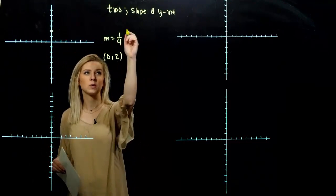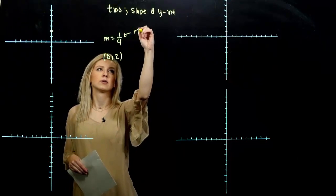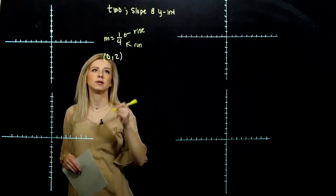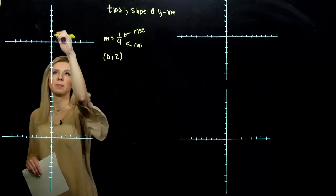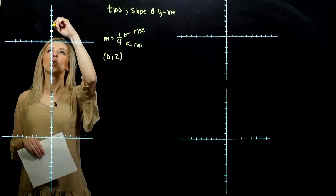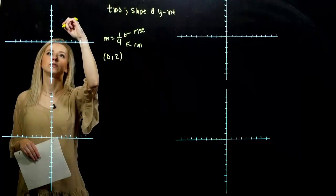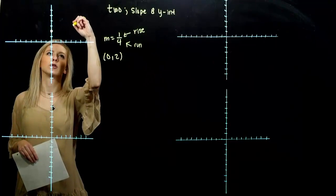From there, we want to rise according to the numerator and run according to the denominator. From that point, I want to rise one, run one, two, three, four. Make another point.